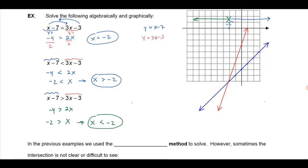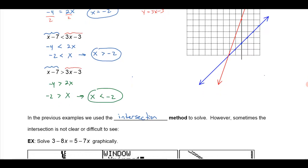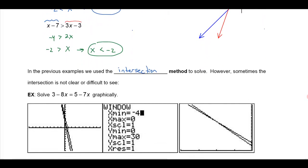In this example, we used what's called the intersection method to solve. However, sometimes that intersection isn't always as clear. And this one's sort of at the bottom of my graph, and even that one was a little bit difficult.